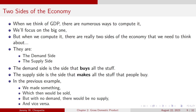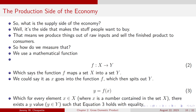As we think of GDP, there are numerous ways to compute it, and we're really going to focus on the big one. When we compute it, there are two sides of the economy to think about: the demand side and the supply side. The demand side buys all the stuff that the supply side makes. The supply side makes the stuff that people want to buy — it produces things out of raw inputs and then sells the finished product to consumers.